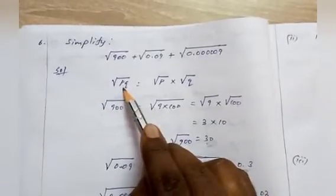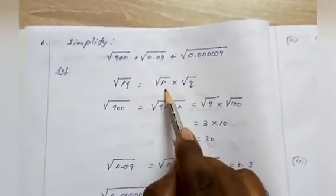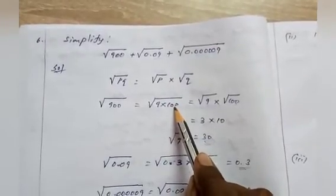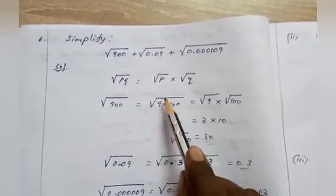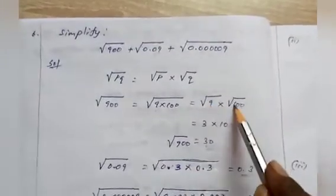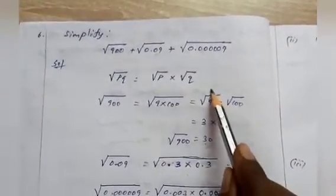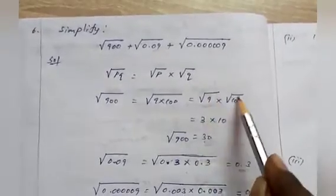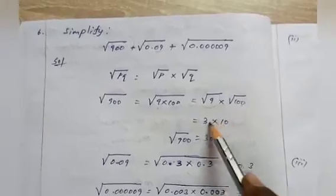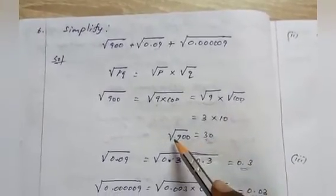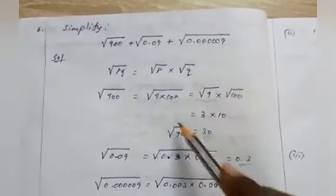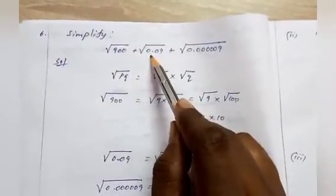Using √(pq) = √p × √q, we get √(9 × 100) = √9 × √100 = 3 × 10 = 30. Therefore √900 = 30.